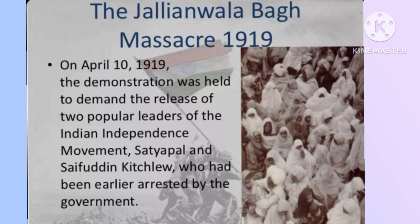General Dyer imposed military rule in Amritsar city and banned all demonstrations — that is, meetings, political meetings, and Indian freedom movement activities against the British rule. Before independence, there was no constitution, so Dyer had the authority to impose this military rule.